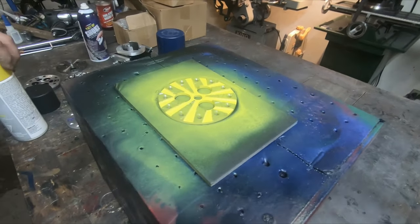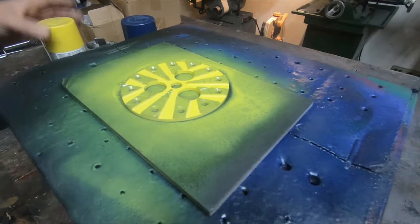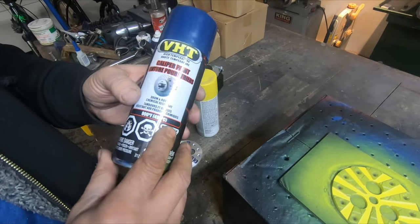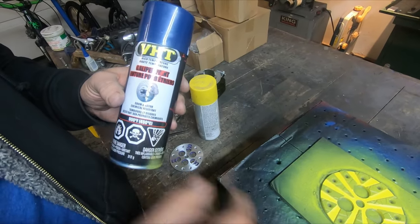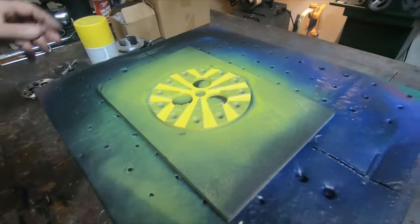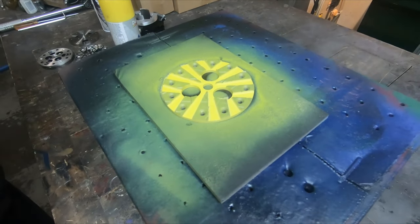We're just going to let that dry for about an hour, and then I'm going to go ahead and apply some VHT high temperature 900 degrees paint into this area. All right, now that our primer is nice and dry, we're going to go ahead and add the blue paint.